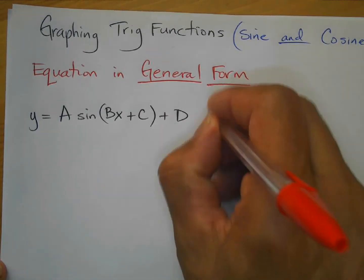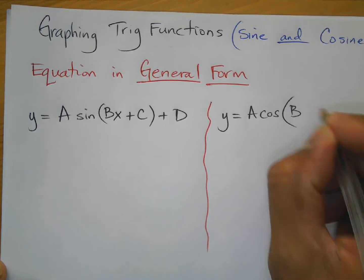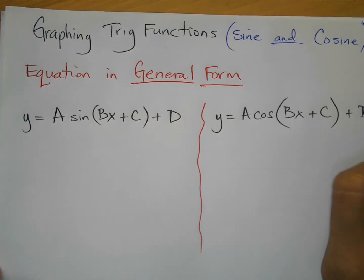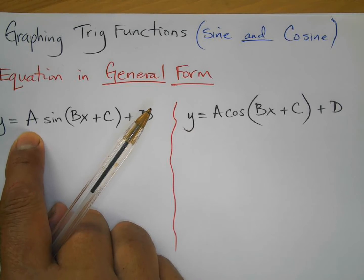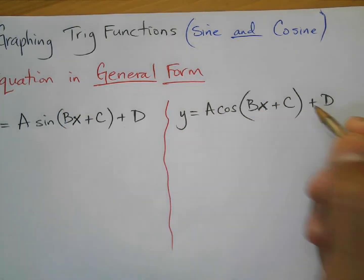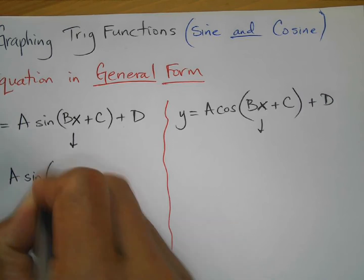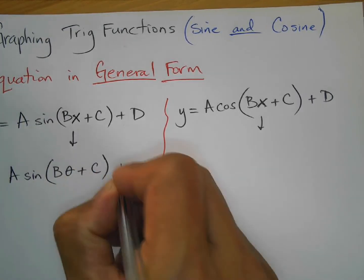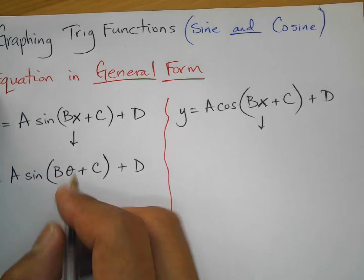...with parentheses bx plus c, close parentheses, plus d. It'll be the same for cosine: y equals a cosine, parentheses bx plus c, close parentheses, plus d. This is the general form. In the book they use lowercase letters a, b, c, d. In the worksheets you'll see theta instead of x because you're working with radians, but treat it the same — you'll be working with these a, b, c, d values.